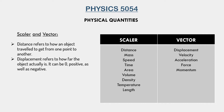Displacement can also be positive and negative. This is because displacement is always given with relation to the current position. So if you're traveling in the opposite direction, we can say that's a negative displacement, and if it's in the same direction, we can say it's a positive displacement.